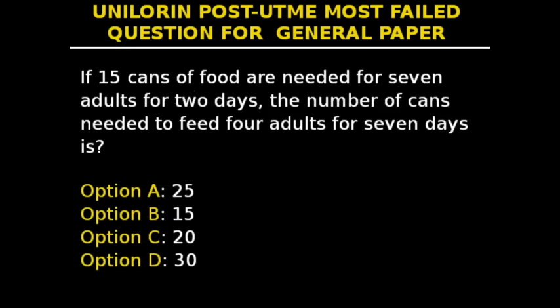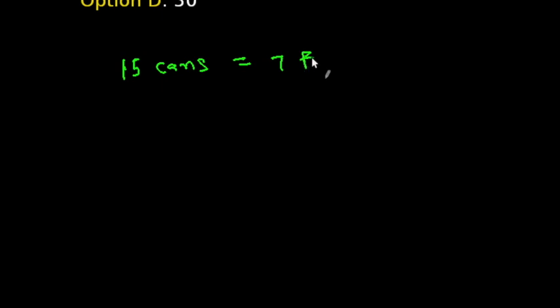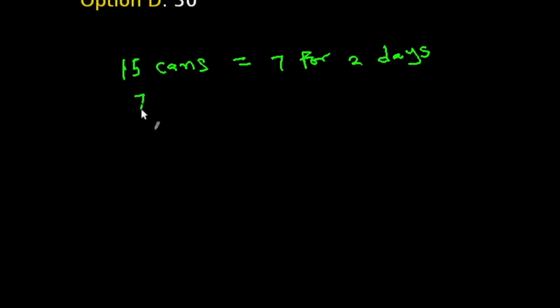This question says: if 15 cans of food are needed for seven adults for two days, how many cans are needed to feed four adults for seven days? From the question, 15 cans feeds seven adults for two days. To find how many cans feed seven adults for one day, we divide 15 by 2, giving us 7.5 cans.